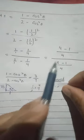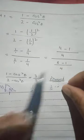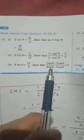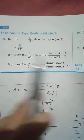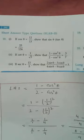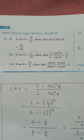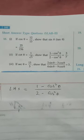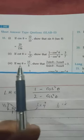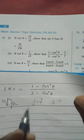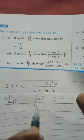So 4 - 1 = 3 and 8 - 1 = 7, giving us 3/7. Comparing with what we had to show, this equals 3/7. Left hand side equals right hand side, so it is proved.